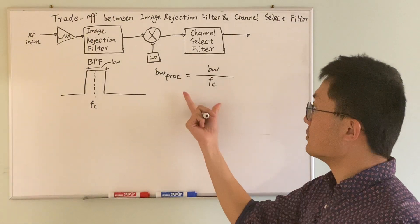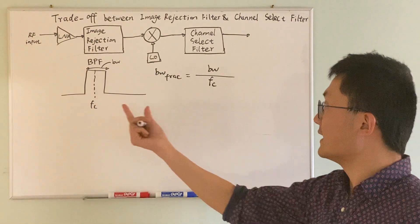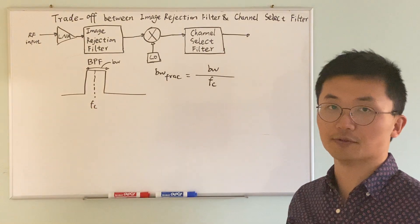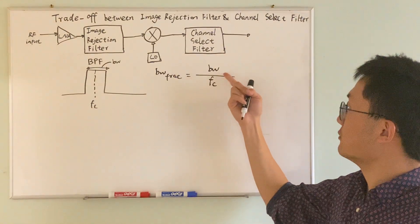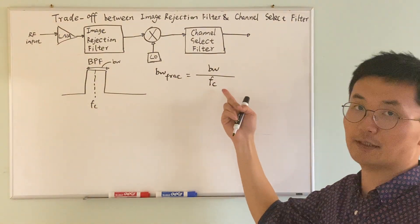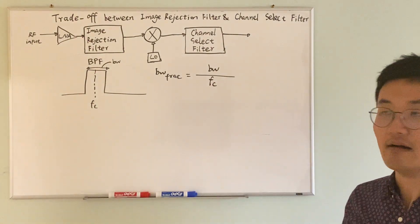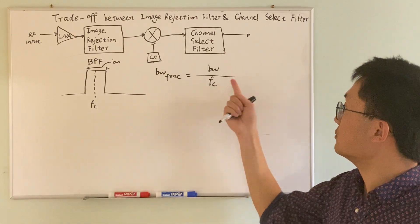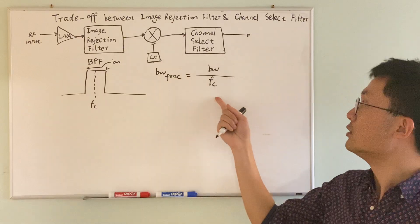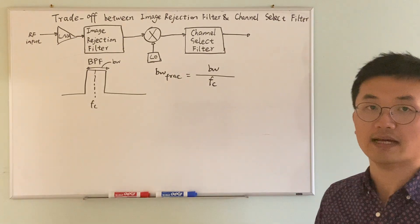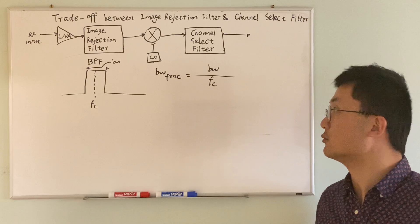So what this equation tells us is that given a particular topology of filter design, as a designer, you may be able to change the bandwidth, you may also be able to change the center frequency. However, the ratio of the bandwidth and the center frequency remains constant. And we call that constant the fractional bandwidth.